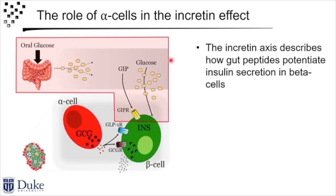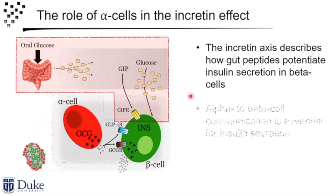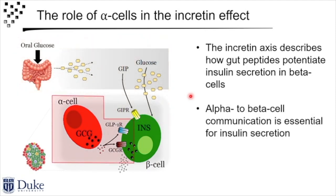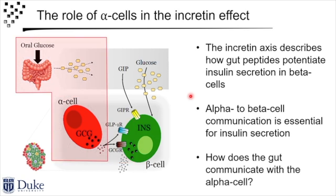What I've shown you is that the classic definition of the incretin effect is how gut peptides talk to beta cells — GIP and GLP-1 circulate and potentiate glucose-stimulated insulin secretion. What I've been talking about is how the alpha cell also contributes to insulin secretion. So the last part of this story is: how does the gut talk to the alpha cell, and does this have a role in postprandial metabolism?